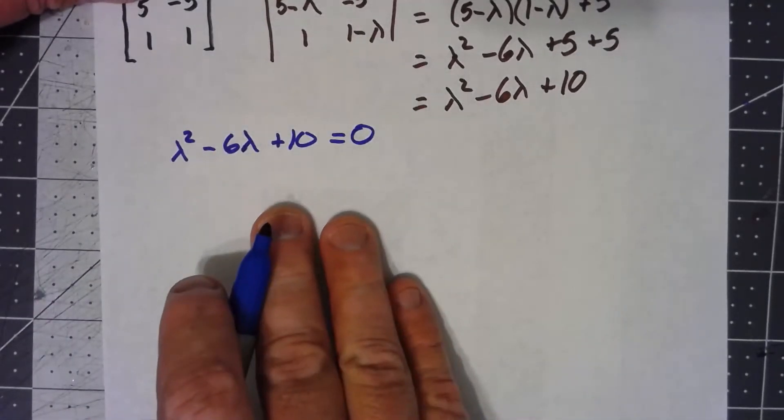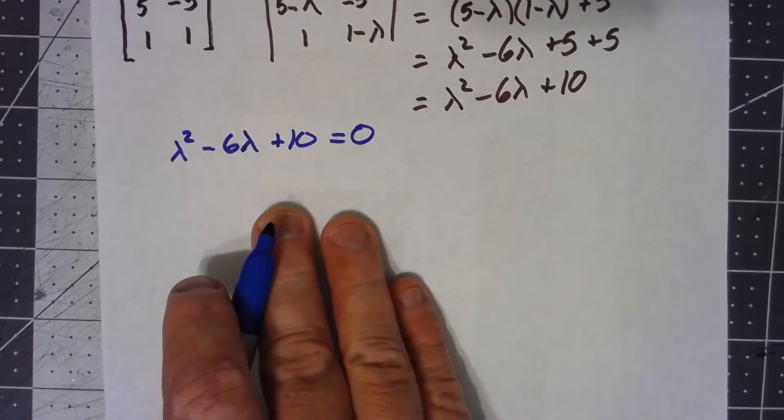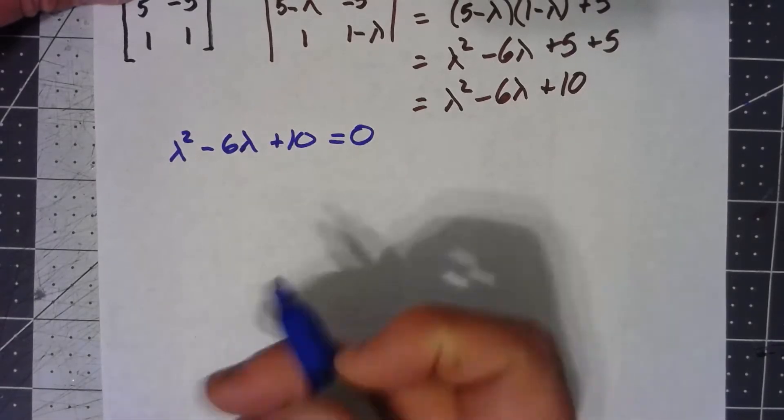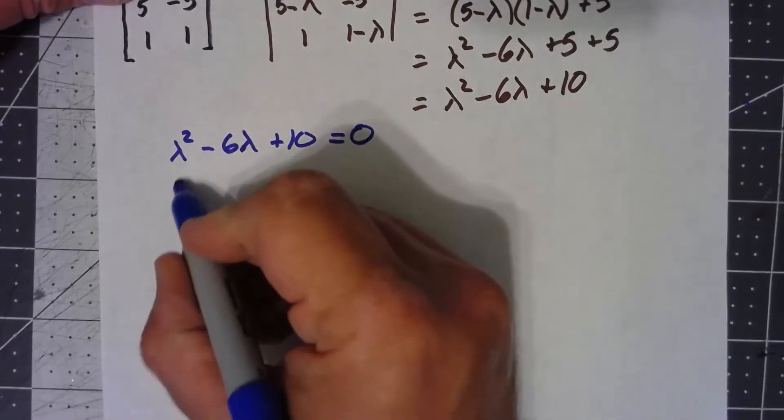Now this doesn't actually factor, so we've got a couple of different ways we could do it. We could do the quadratic formula. I like completing the square, so I'll do it that way.